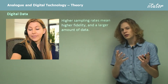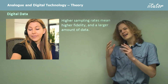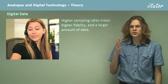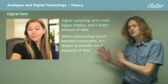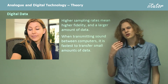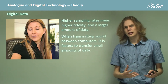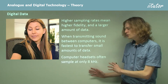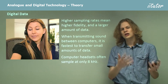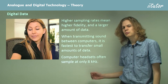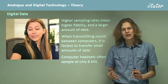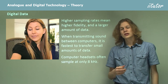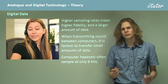Higher sampling rates produce higher fidelity but also a larger amount of data, since every sample takes up a certain amount of memory on a disk or flash drive. When transmitting sound between computers — for example talking on a headset over Skype — we want to transfer information very quickly. A very high sampling rate means too much information to transfer in real time, so computer headsets use a much lower fidelity. Many headsets sample at about 8 kilohertz — much lower than a CD — which is why you can tell when someone is speaking over a computer that they're not using a high-quality microphone.